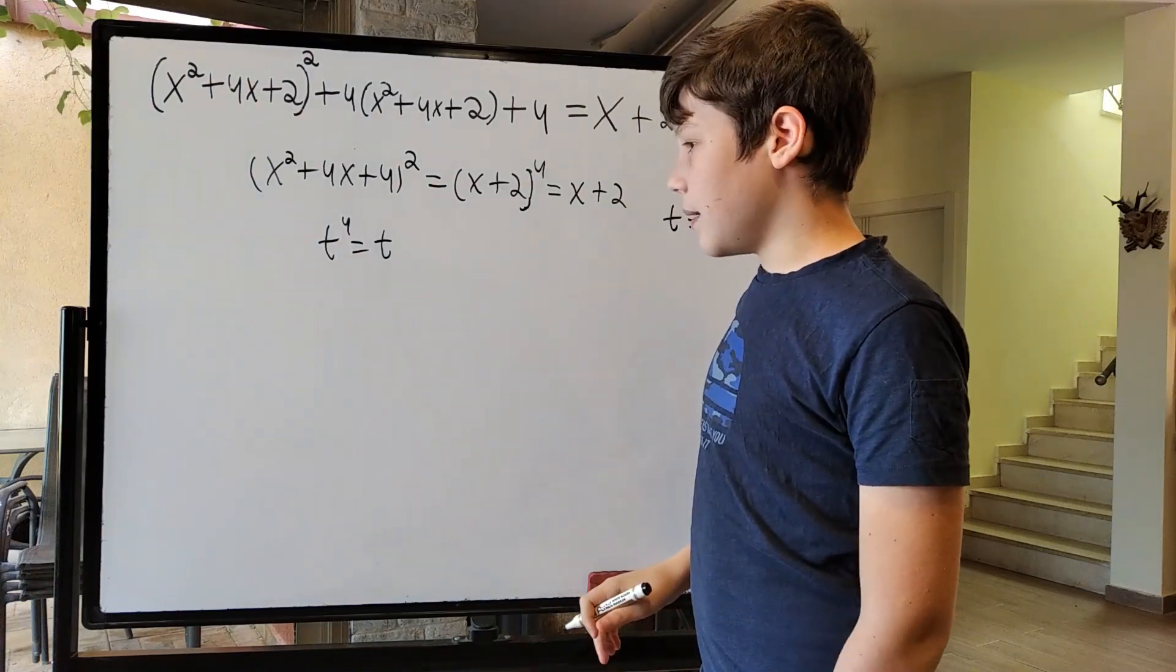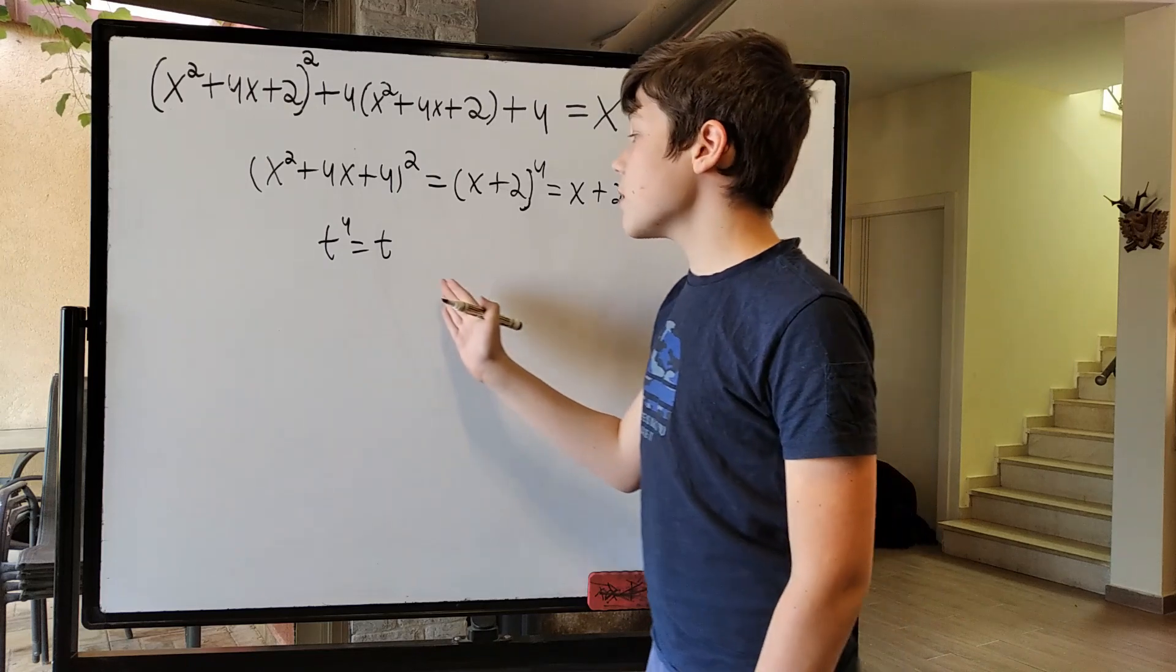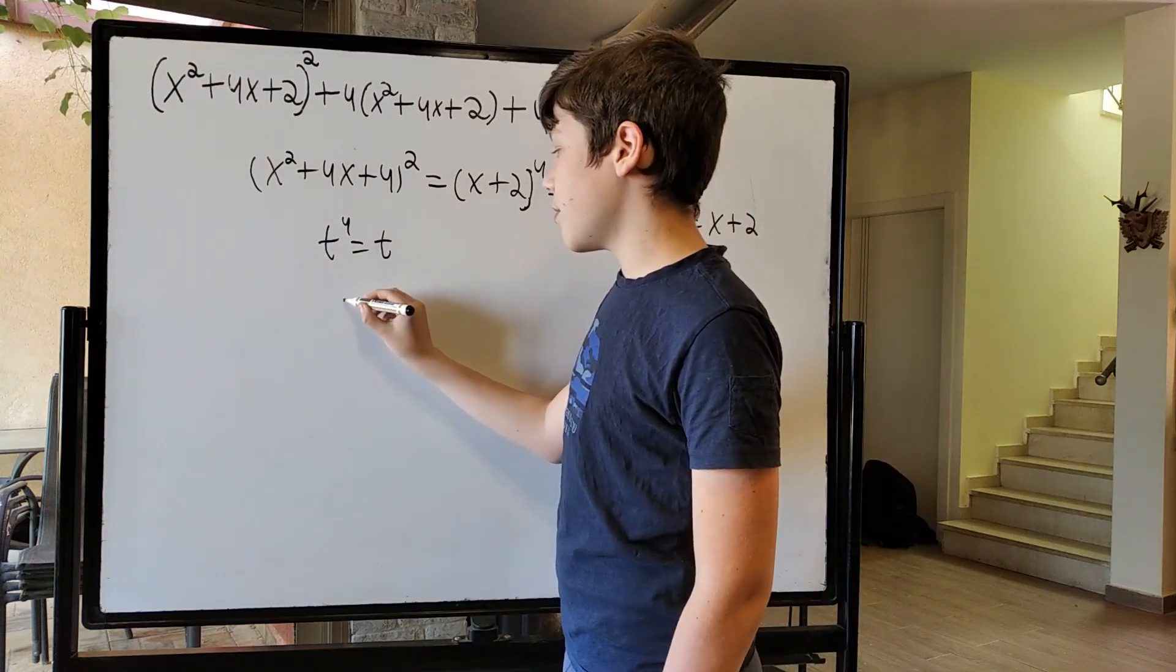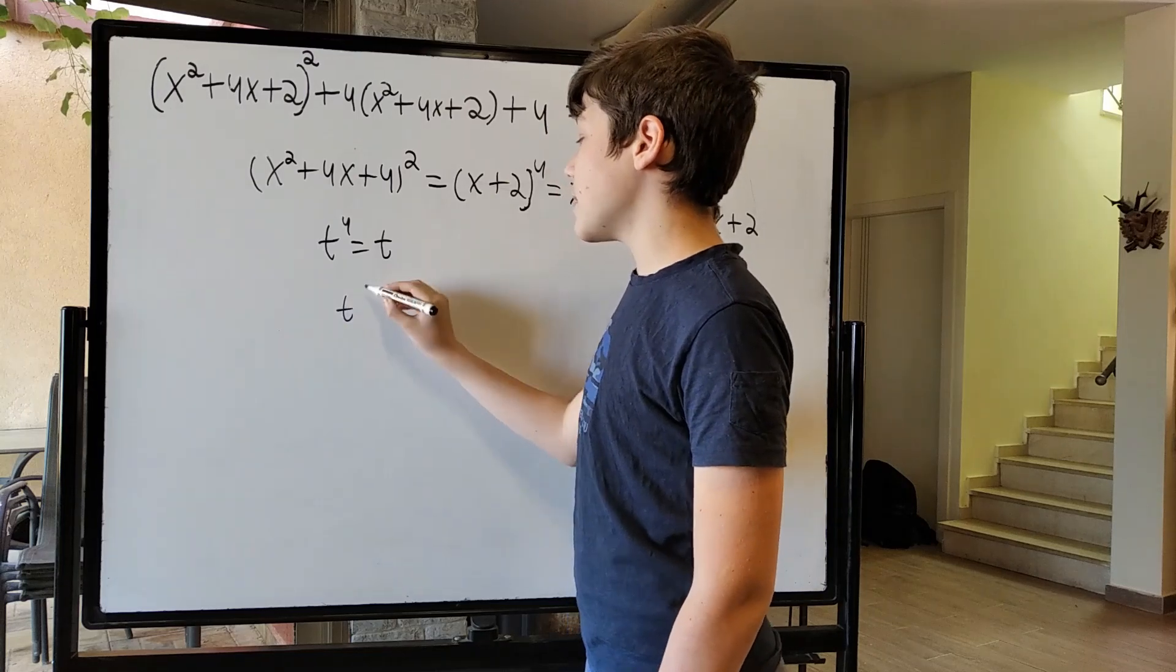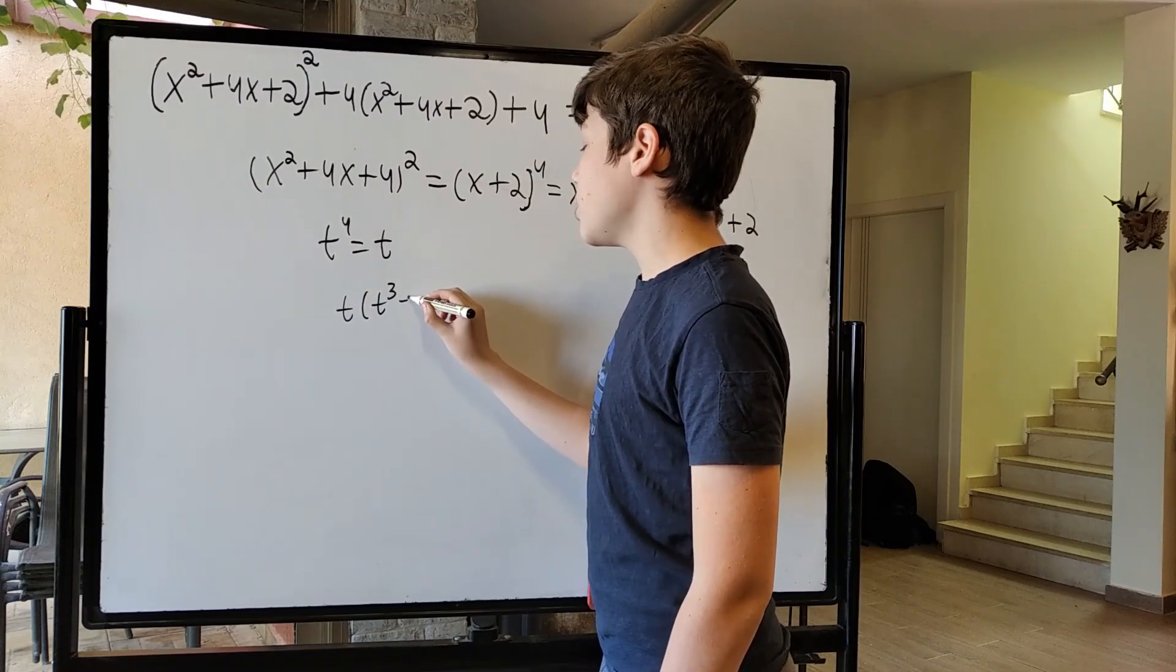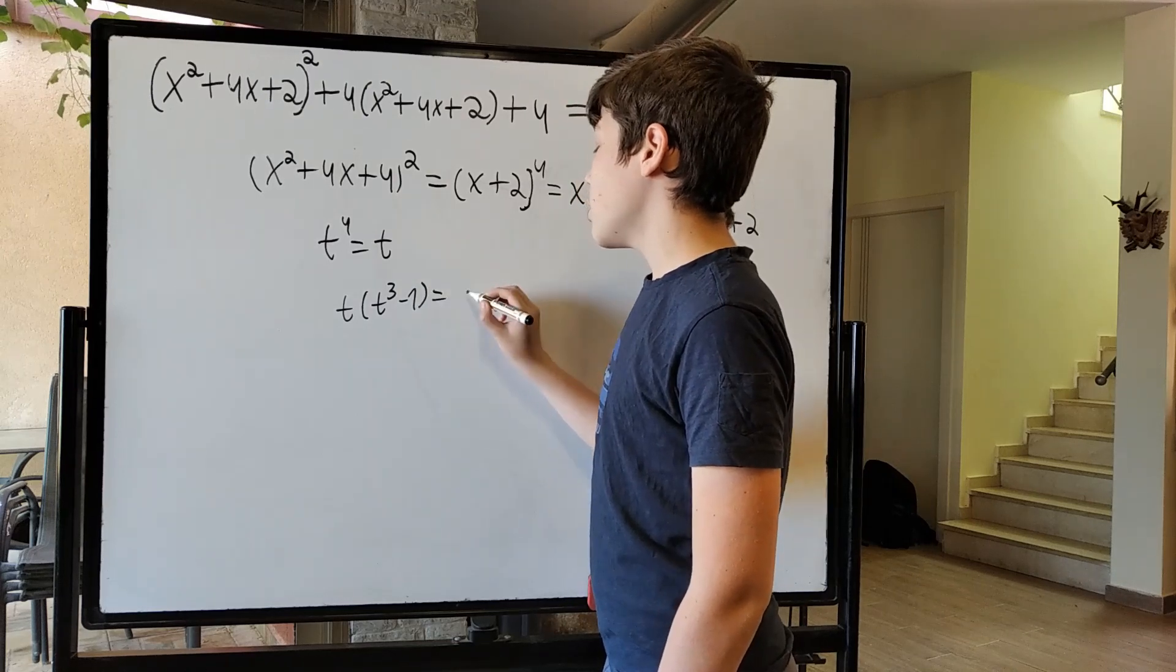So let's see. First of all, we're going to take all the parameters and move them to one side and leave the rest on another. So we get t to the 4th minus t or t times t cubed minus 1, which is 0.